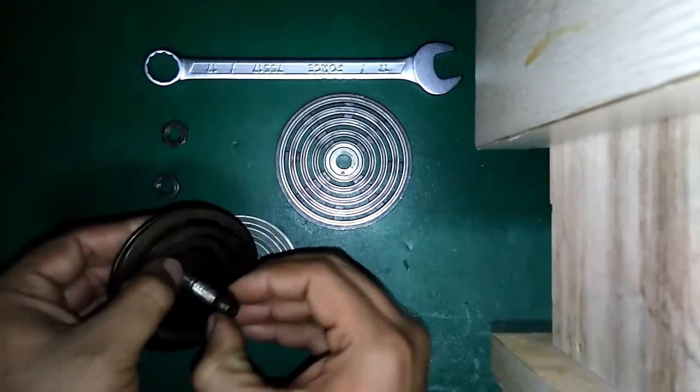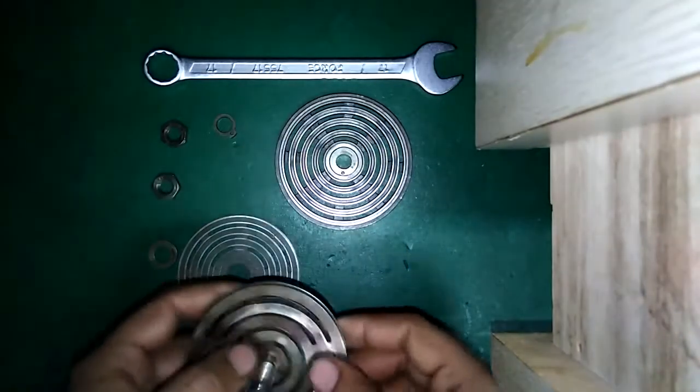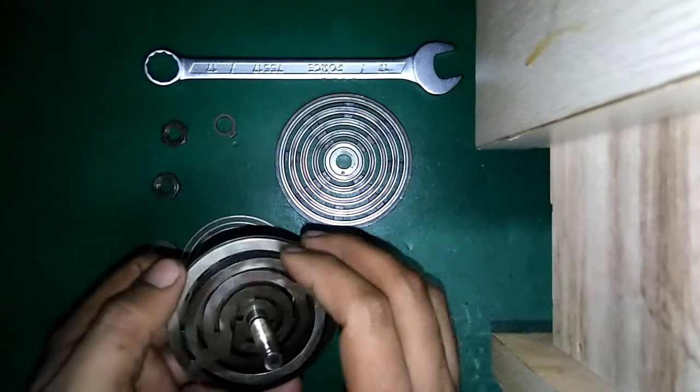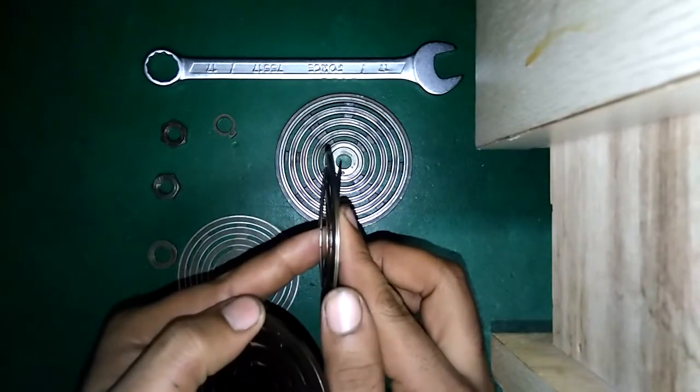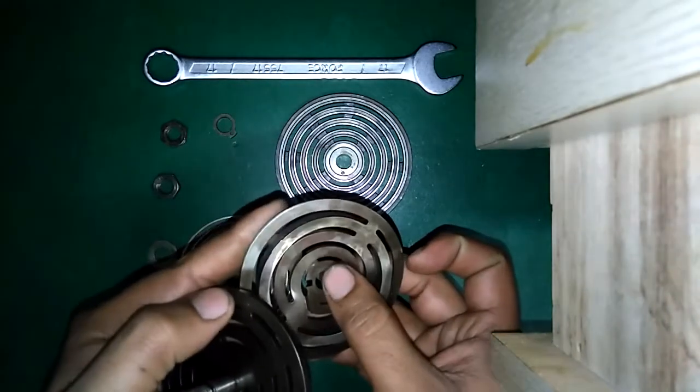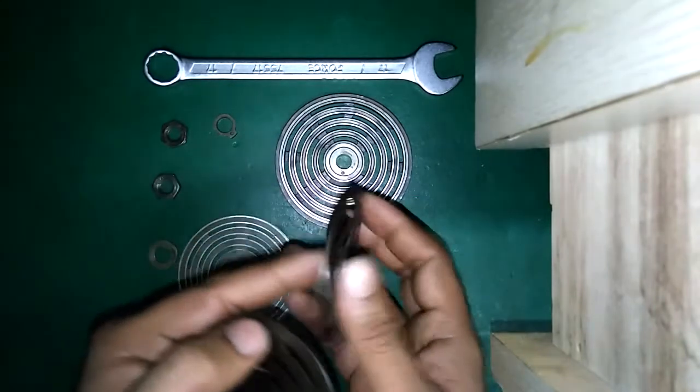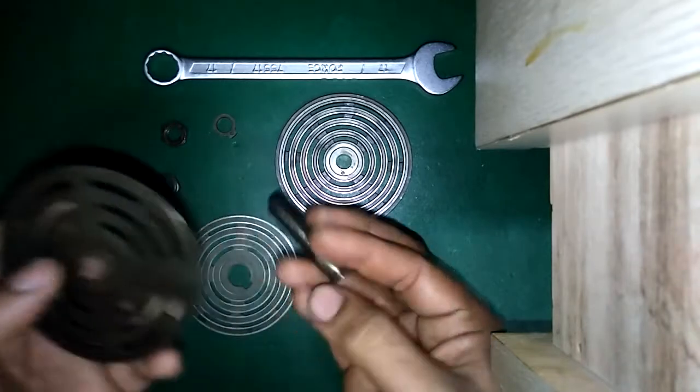This is the lift washer. Spring one and spring two combined. This has a tack welding here so these cannot be separated.